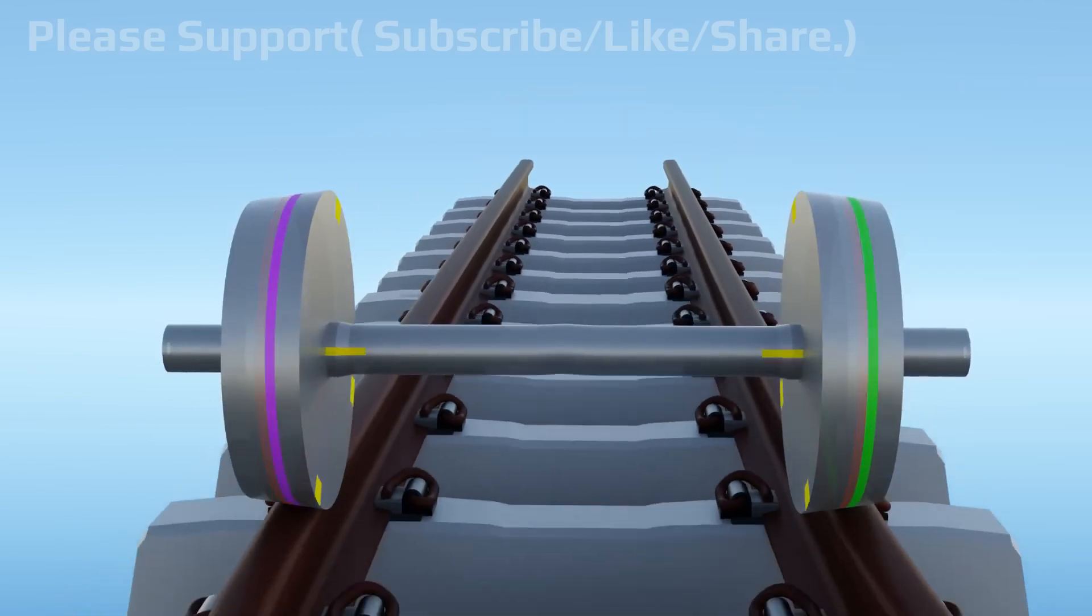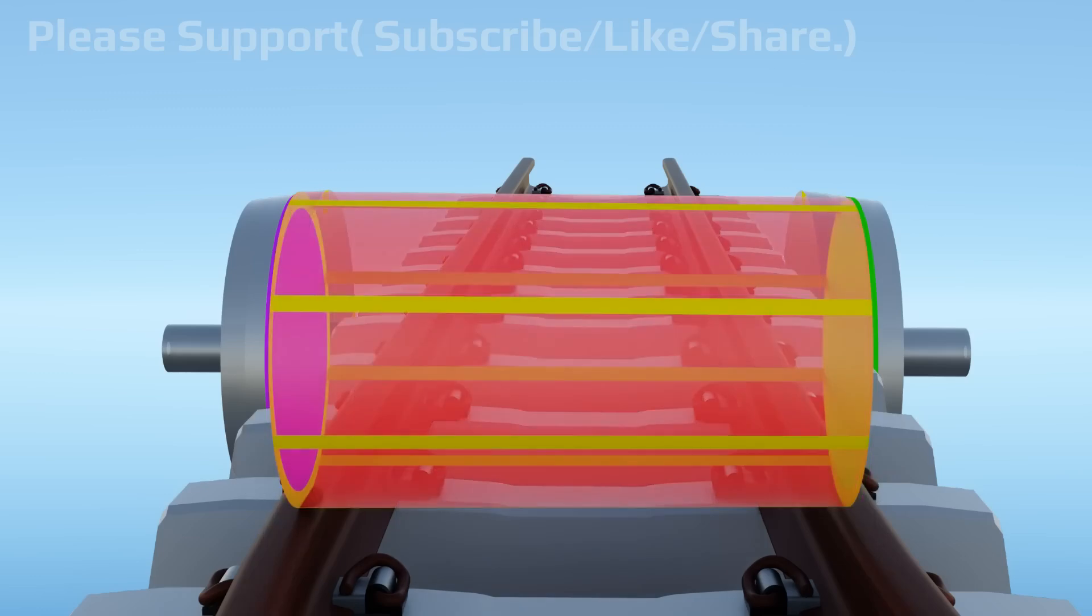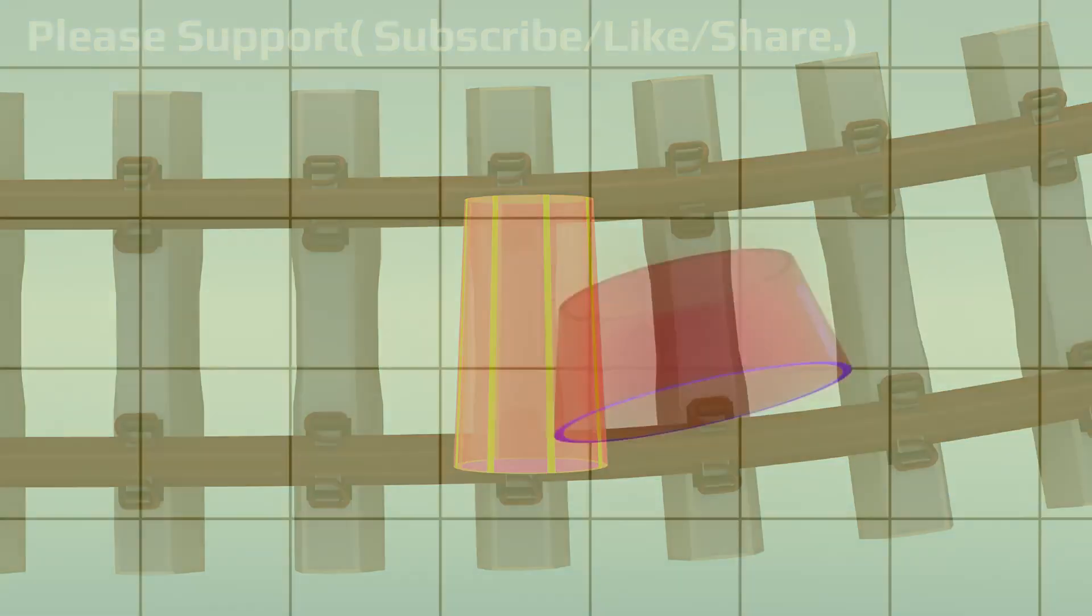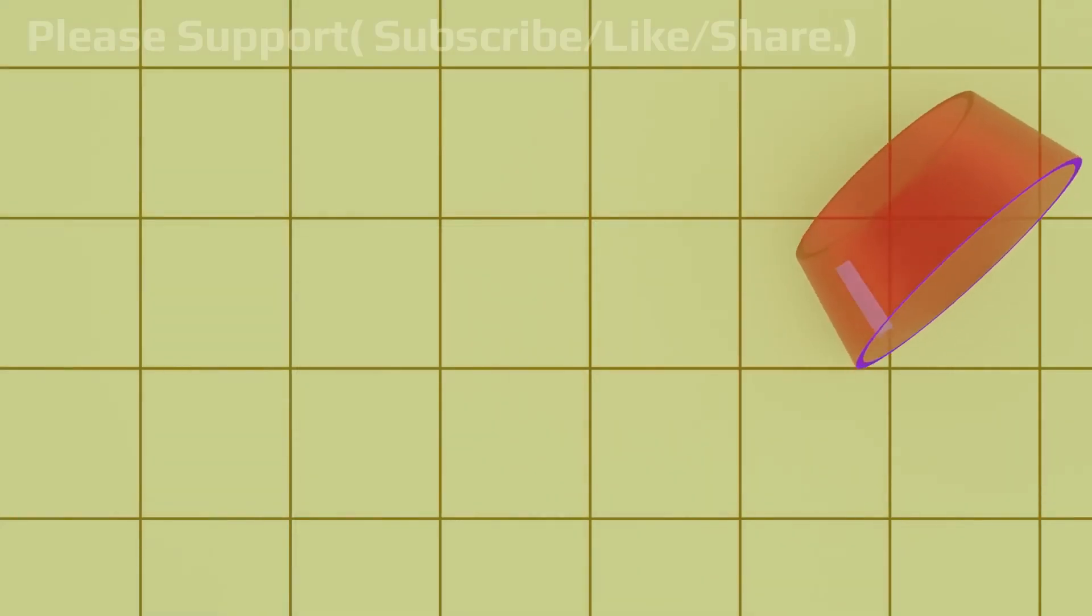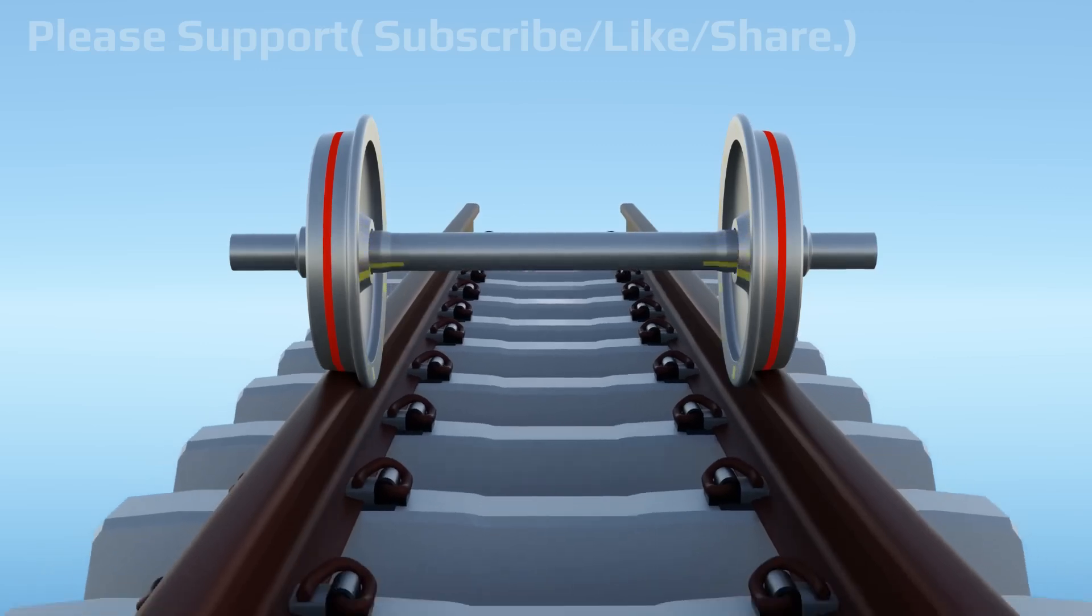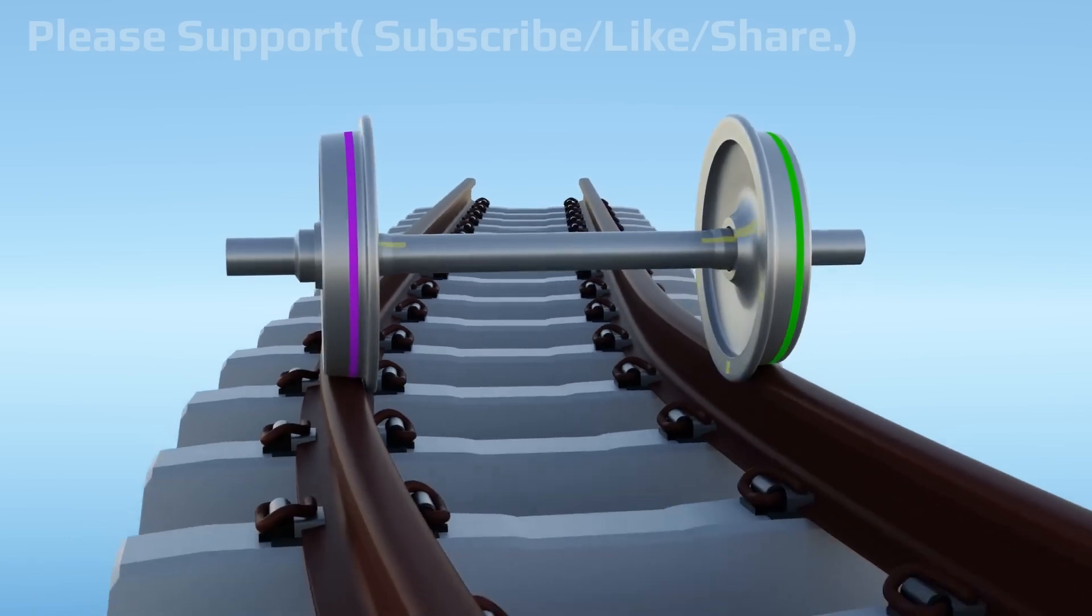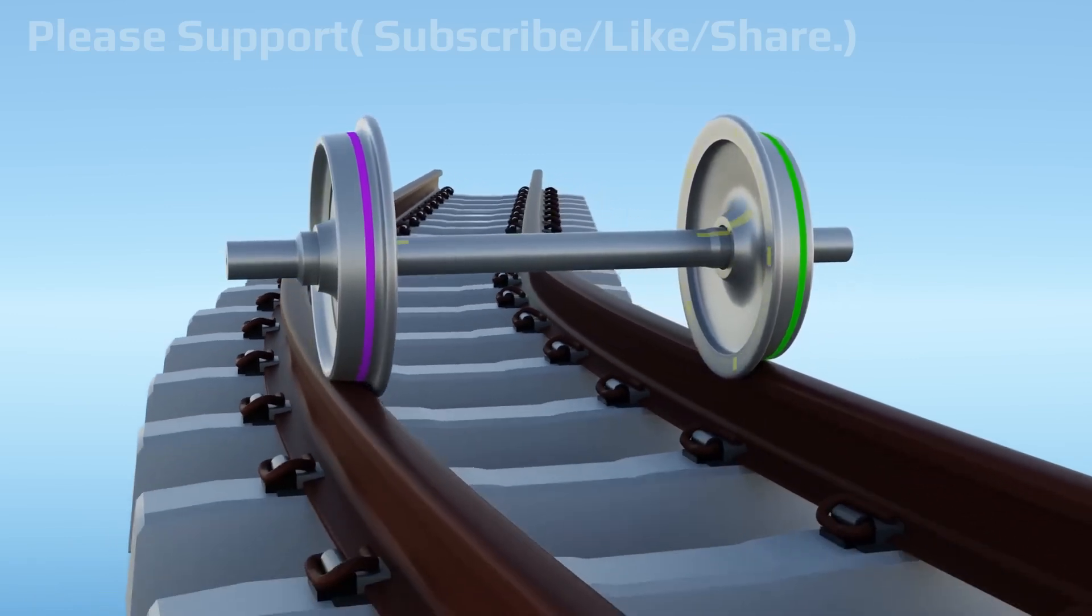Now the wheel set will act like a semi-cone. We know that while rolling, a semi-cone turns towards smaller diameter side. This will provide steering force to the wheel set to run on the curved rail, and the wheel set keeps rolling on the curved rail easily.